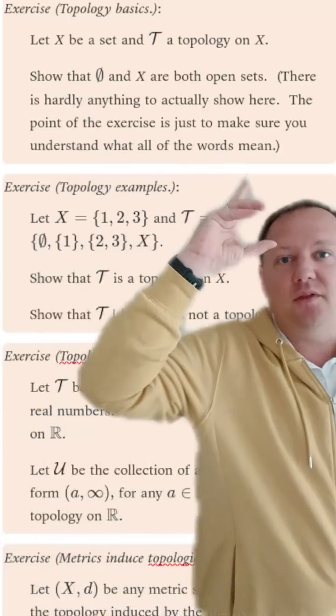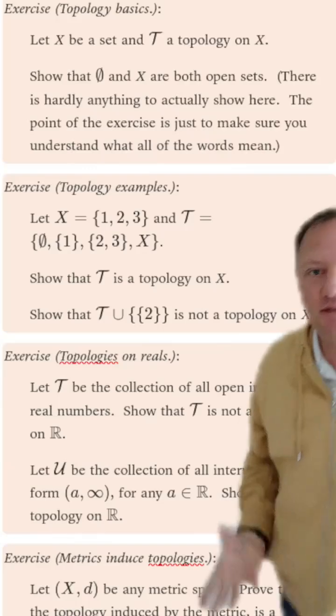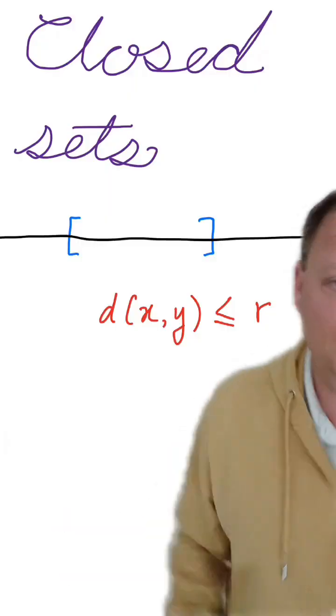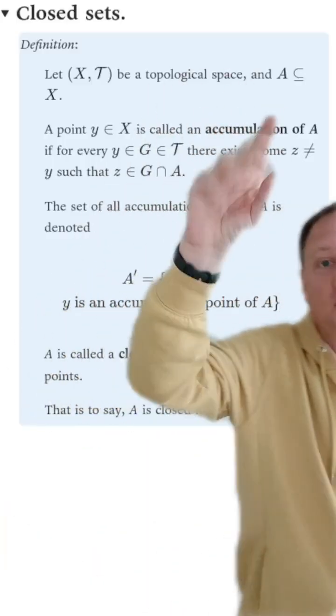Continuing from the conversation about topology-induced biometric, here are a bunch of good exercises to do. We're now going to start building towards a notion of a closed set. First, we need to define the notion of an accumulation point of a given set.